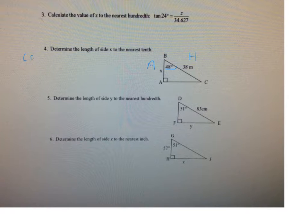So what we do is we set it up as cosine of 48 equals adjacent over hypotenuse, so that will be X over 38. And then when you multiply the cosine of 48 times 38, that will give you X.